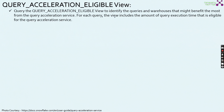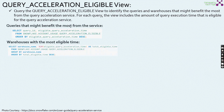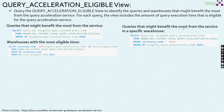The QUERY_ACCELERATION_ELIGIBLE view is another way to identify queries and warehouses that might benefit most from the query acceleration service. For each query, this view includes the amount of query execution time that is eligible for query acceleration. You can SELECT query_id and eligible_query_acceleration_time from SNOWFLAKE.ACCOUNT_USAGE.QUERY_ACCELERATION_ELIGIBLE, ordered by that time, to find which queries and warehouses benefit most.